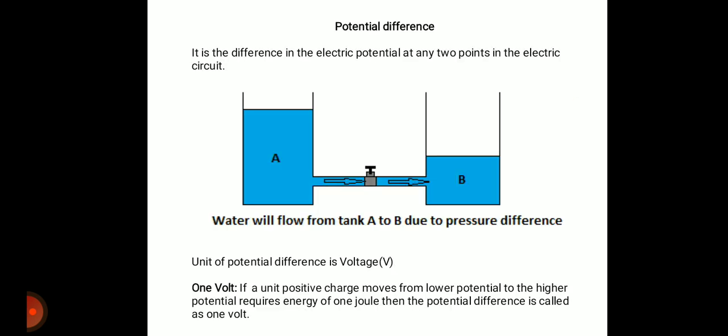What is potential difference? It is the difference in the electric potential at any two points in an electric circuit. We can understand this with a figure of two containers, container A and container B. Container A has a higher liquid level, so it has higher potential energy, while container B has a lower liquid level and lower potential energy.